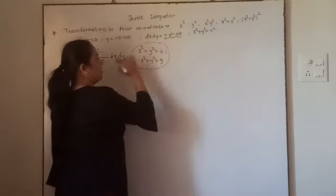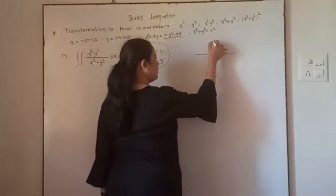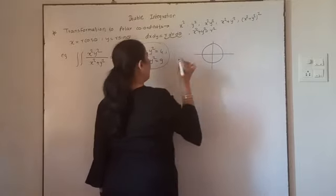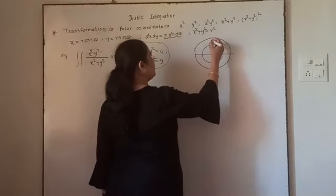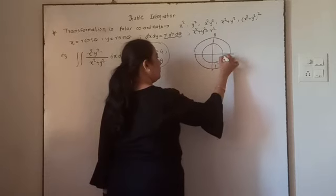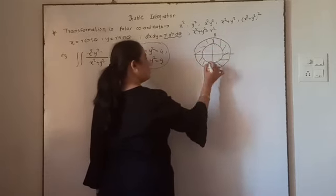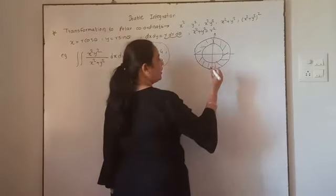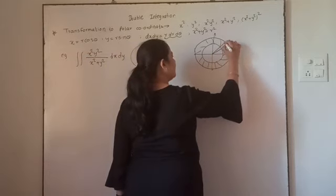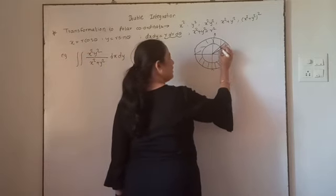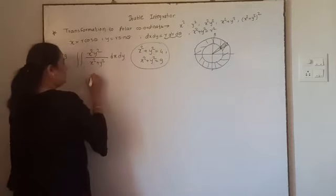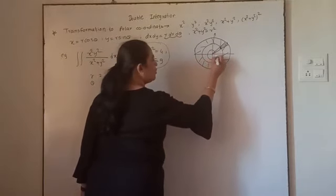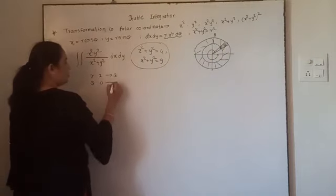If you observe, these are circles with center at the origin. The first circle has center at origin and radius equal to 2, and the second has center at origin and radius equal to 3. We want to evaluate this integral over the region between the two circles — the annulus. Considering the radial vector, r varies from 2 to 3, and for the complete annulus, θ varies from 0 to 2π.